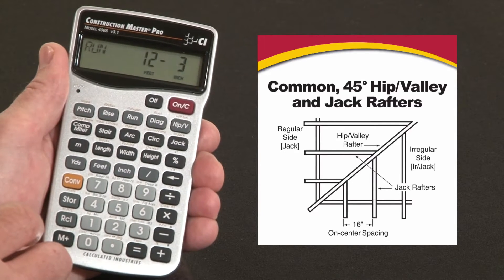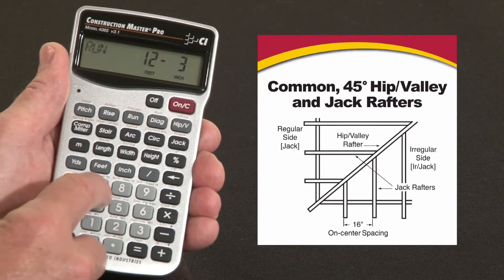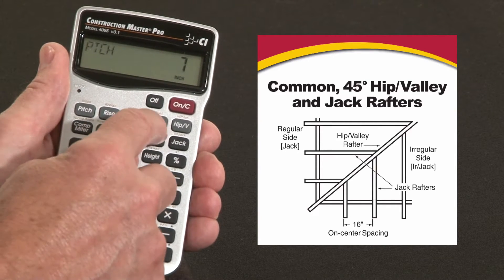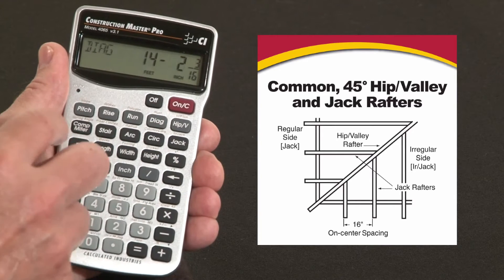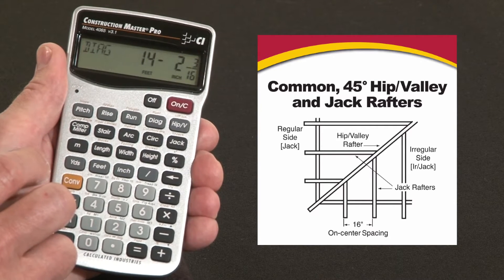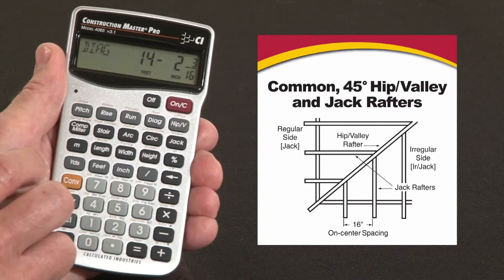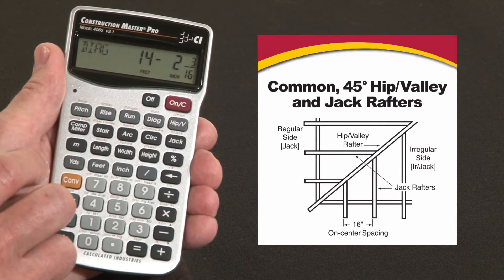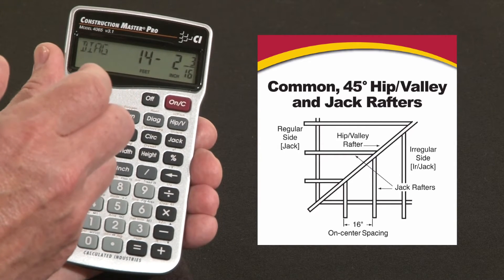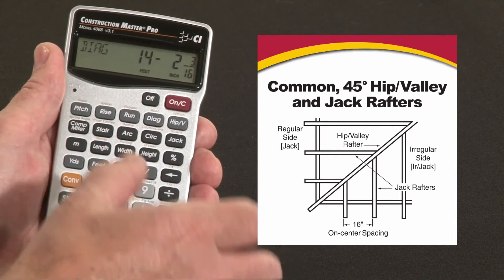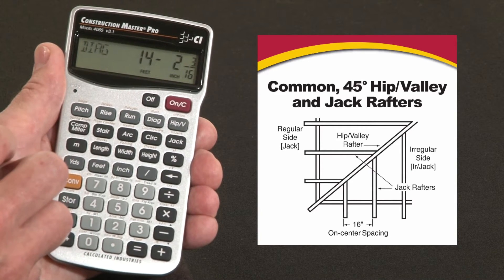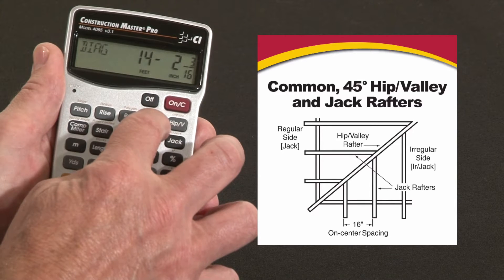This is a 7-12 pitch roof, so I'm going to enter 7 inches of pitch. Now it's all set — I hit the diagonal key. The point-to-point diagonal is going to be 14 foot 2 and 3 sixteenths. That's from the center of the ridge to the outside edge of the plate. You would need to make an adjustment for half the thickness of the ridge and add any overhang for the rafter tails for the exact cut length, but that gives you the hypotenuse — the exact theoretical length.